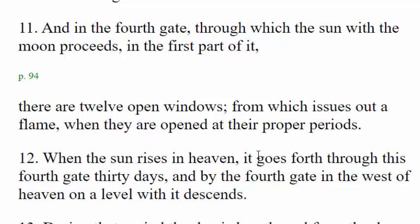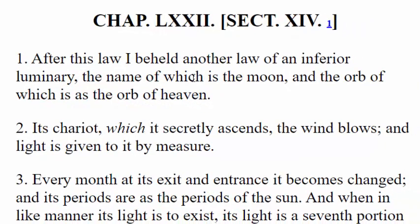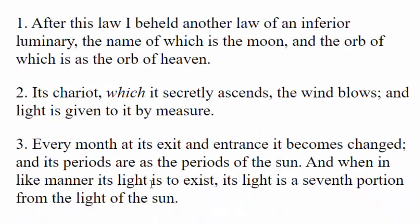Notice that I'm saying solar year. We know that the sacred calendar is a solar-lunar calendar, so we're actually missing one of the elements on our timepiece. We have the position of the sun in relationship to the gates or the stars that tell us what solar month we're in, but the moon is not represented on this diagram at all. For that information, we have to come to the next chapter — chapter 72 of the book of Enoch — to hear about the second law of the luminaries. Verse 1 says: 'After this law, I beheld another law of an inferior luminary, the name of which is the moon, and the orb of which is as the orb of heaven.' Whereas chapter 71 was talking about the stars and their relationship to the sun, here we'll see how the moon plays a part in the sacred calendar.